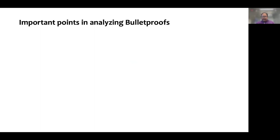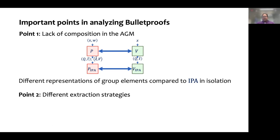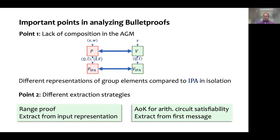There are a couple of important points worth noting about analyzing bulletproofs in our framework. The first is that there is no easy composition in the AGM. You would think it would be enough to analyze the inner product argument in isolation first, and then compose it with the analysis of the other sub-protocol. But this modular approach is not possible because the representation of group elements in the inner product argument run in isolation is different from the representation of group elements when run as a sub-protocol for bulletproof instantiations. The second point is that extraction strategies for different instantiations of bulletproofs are different. For example, in the range proof, the instance is a group element provided by the prover, and the extractor can directly extract from the representation. But for the argument of knowledge for arithmetic circuit satisfiability, the input has no group elements and we need to use a different strategy.